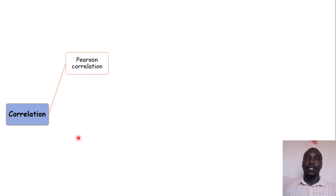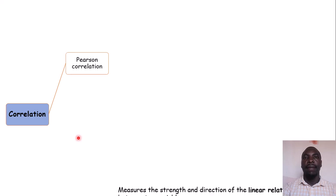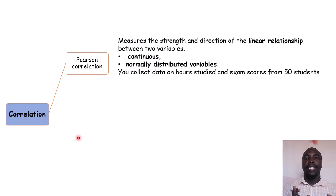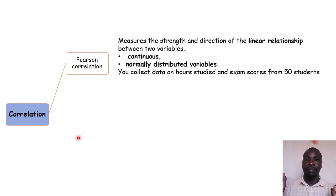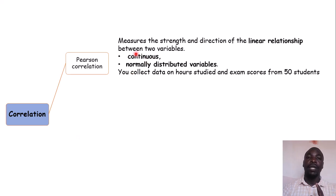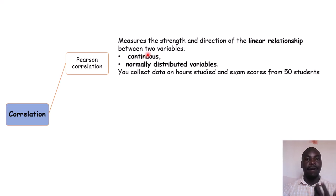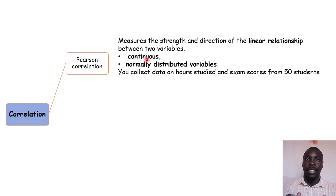Let's look at the details of each. Pearson's correlation measures the strength and direction of a linear relationship between two variables. Those two variables should be continuous and numerical in nature, like weight and age, and each variable must be normally distributed — the data should come from a normally distributed population.